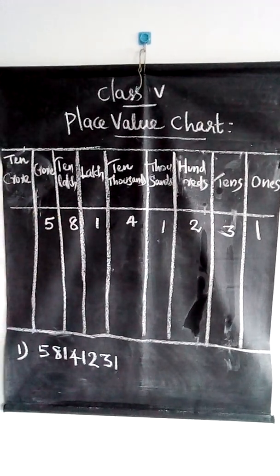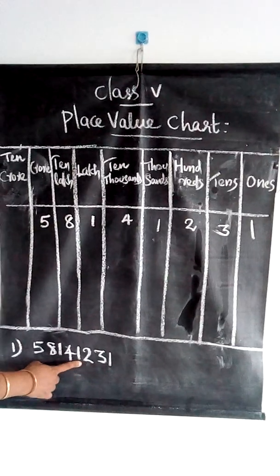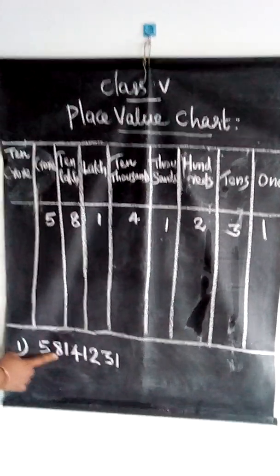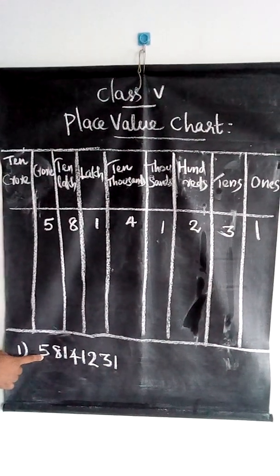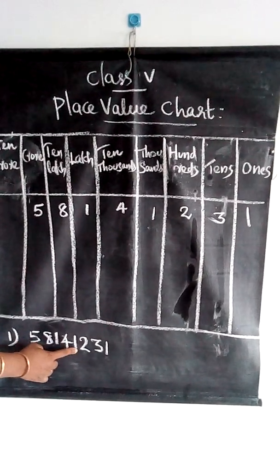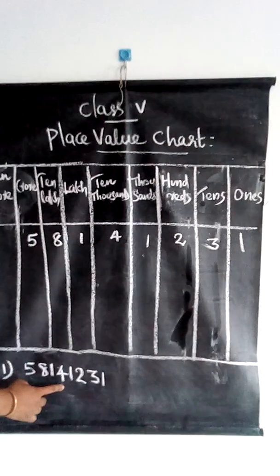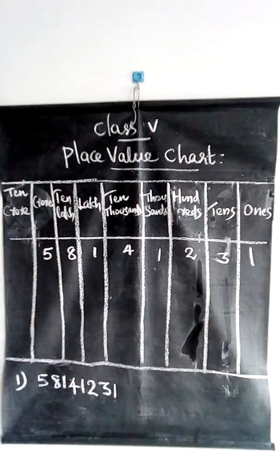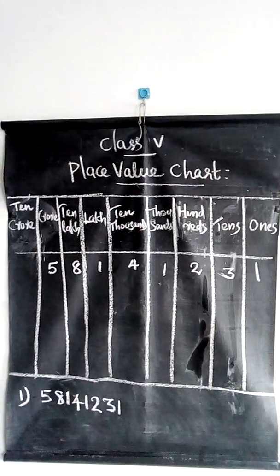So the columns are: ones, tens, hundreds, thousands, ten thousands, lakh, ten lakh, crore. The number name of this number is 5 crore, 81,41,231. That is the number name, and this is how we mark a number in the place value chart.